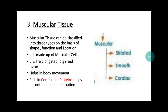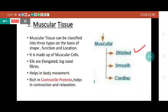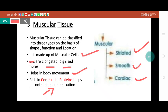Muscular tissue - the third tissue. Basically muscular tissue, according to their shape, size, function, and location, is classified into three categories: striated, smooth, and cardiac. Muscular tissue is made up of muscular cells - striated muscles are made up of striated fibers, smooth muscle tissue is made of smooth cells, and cardiac muscles are made up of cardiac cells. They are all basically elongated large-size fibers. Muscular tissue is rich in contractile protein, which helps in contraction and relaxation - this is a very important point that comes in exams.